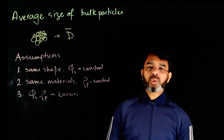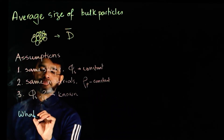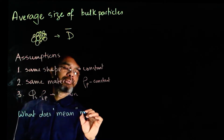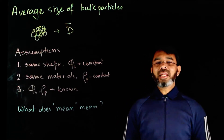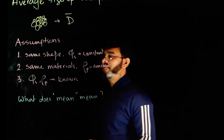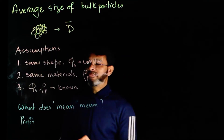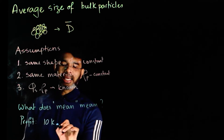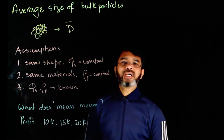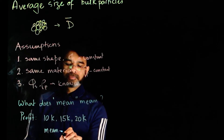Let's take a little detour about what 'average' or 'mean' means. When you say average or mean, the first thing that comes to mind is one particular type of mean. For example, if the profits for my business are 10K, 15K, and 20K in three successive years, we have a mean or average profit of 15K.